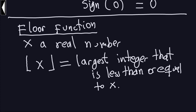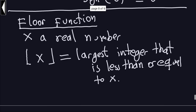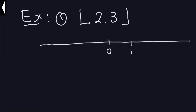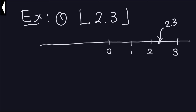It's better to explain this concept with examples. Example number one: the floor function of 2.3. The best thing to compute the floor function is to draw the real line. So I'm going to draw the real line with 0, 1, 2, 3. What I have to do is locate this number — 2.3 — on the real line. So 2.3 is located between 2 and 3, somewhere around here.